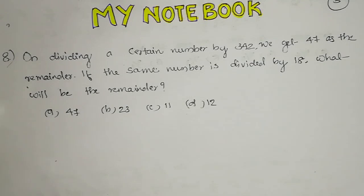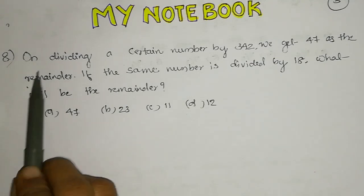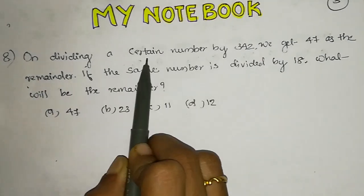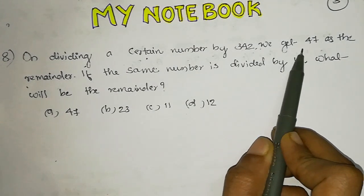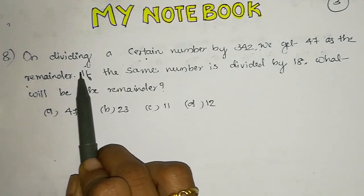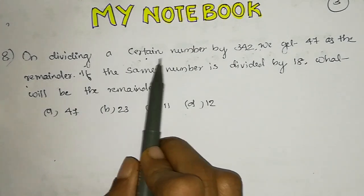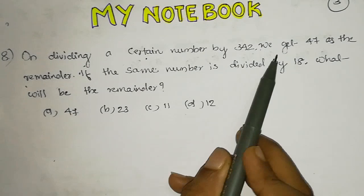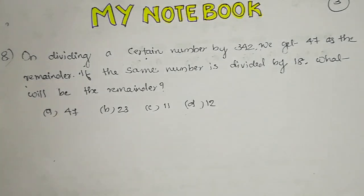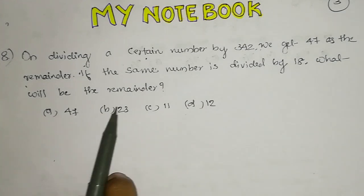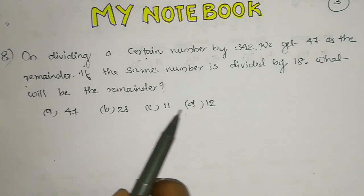So the eighth problem: on dividing a certain number by 342, we get 47 as the remainder. If the same number is divided by 18, what will be the remainder? Options: 47, 23, 11, and 12.